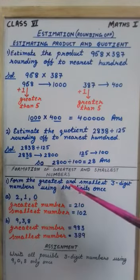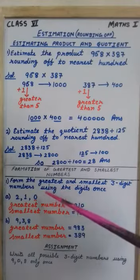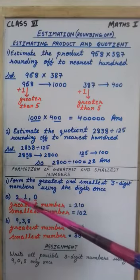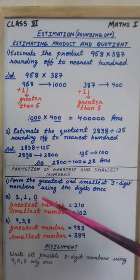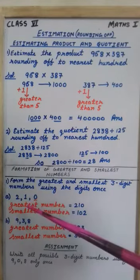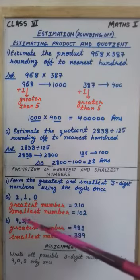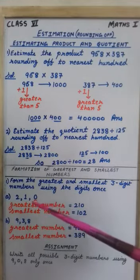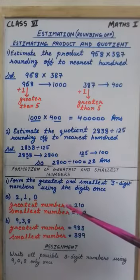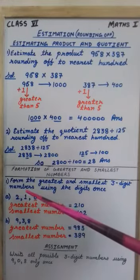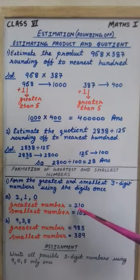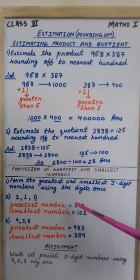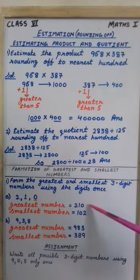Form the greatest and smallest 3 digit numbers using the digits once. Let's take first question. Digits are 2, 1 and 0. Now we have to make greatest number as well as smallest number and only 3 digit number. First of all I am starting greatest number. Which one is the greatest digit here? 2. That's why 2 is written first. Then next one is 1, so 1 is written. And the last one is 0, so at last 0.